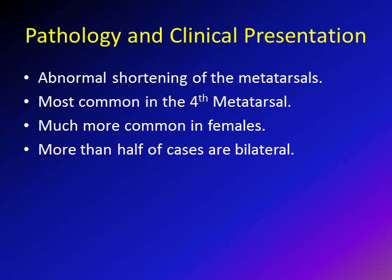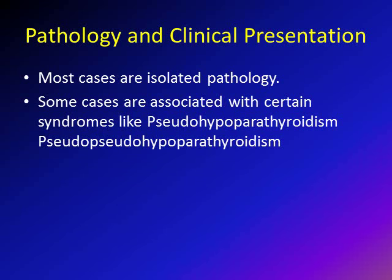So what is brachymetatarsia? Brachymetatarsia is abnormal shortening of the metatarsal, and the most common metatarsal to be affected is the fourth metatarsal. It's basically much more common in females — more than 25 to 1 of cases are in females — and more than half of the cases are bilateral, meaning affecting both feet.